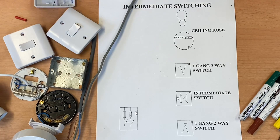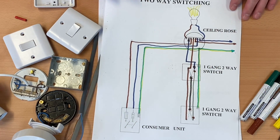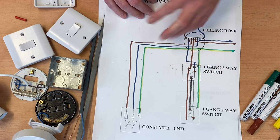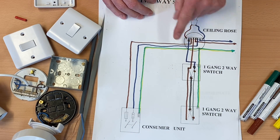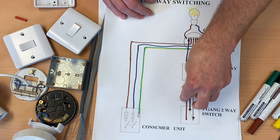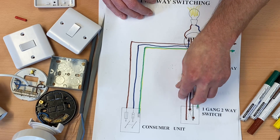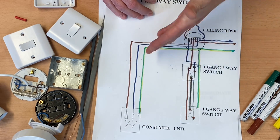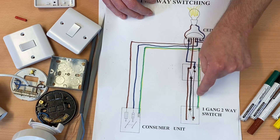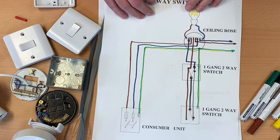Taking it back one stage: we looked at our two-way switching in our previous video, and it's exactly the same wiring diagram apart from this section here where we introduce another switch. The intermediate switch goes in here. So if you've got a two-way wiring circuit, you can make an easy adjustment by adding an intermediate switch in — and that's probably what you'll end up doing in the workshop.